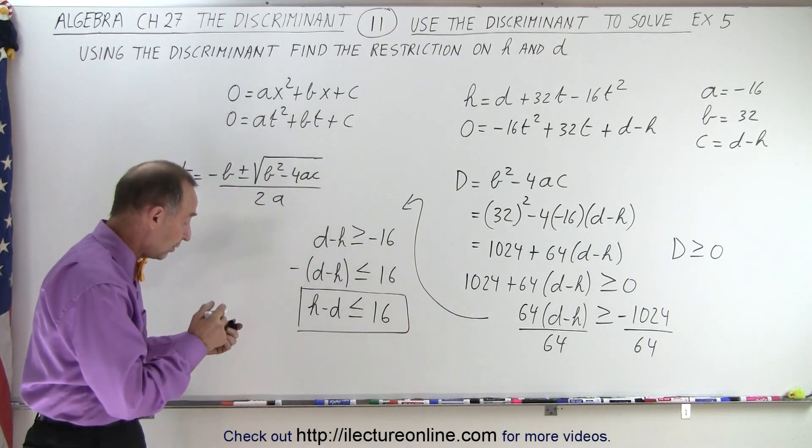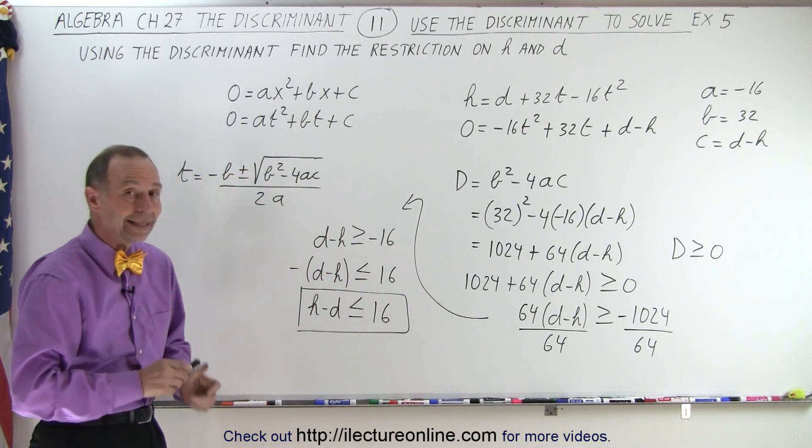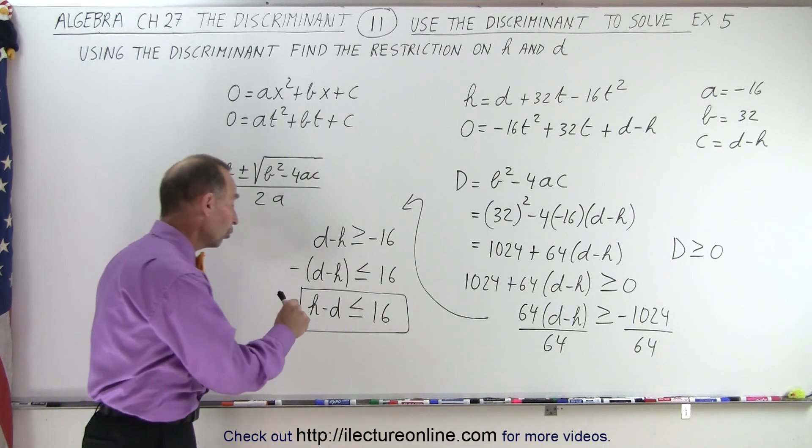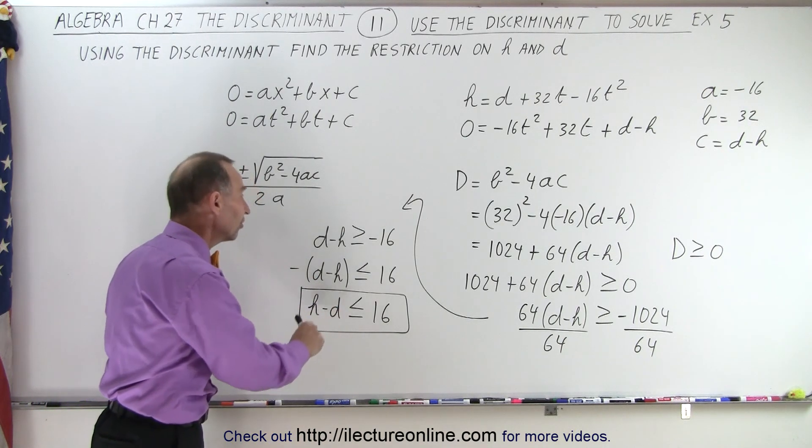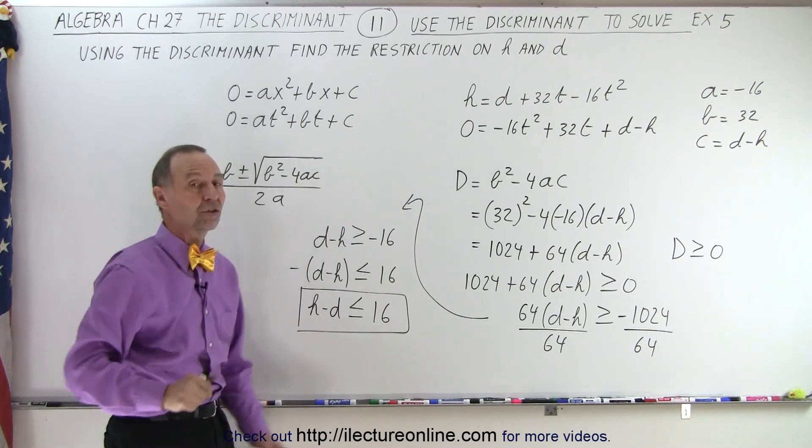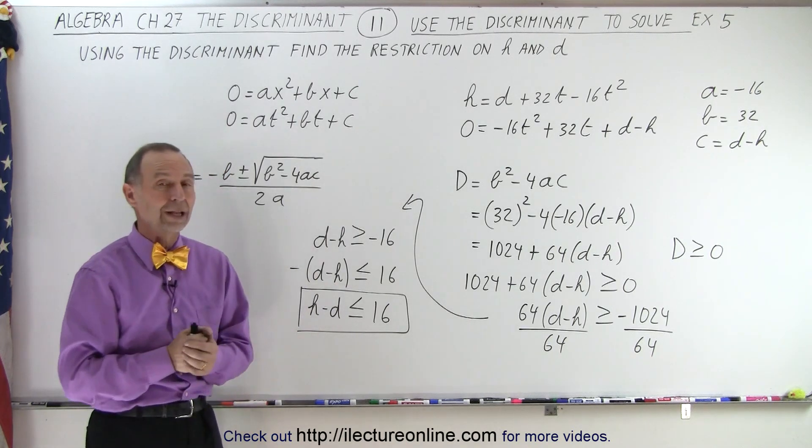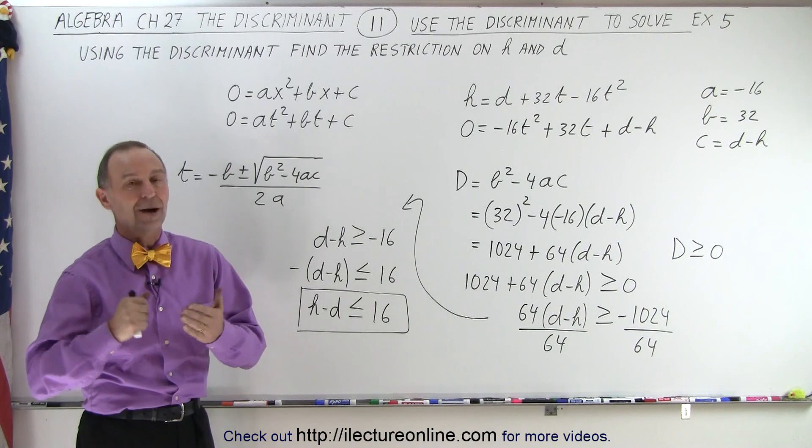We can't separate the two because we have two of these variables. But we can say that h minus d must always be less than or equal to 16 for a valid solution, a valid root or a valid solution to that equation. And that is how it's done.